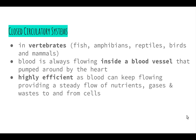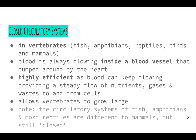A closed circulatory system is highly efficient, as blood can keep flowing and provide a steady flow of nutrients, gases, and wastes to and from the cells. This allows vertebrates to grow large, which ties into the idea that organisms need transport systems in order to carry nutrients to cells and wastes away. Without a closed circulatory system, organisms couldn't grow to the size that they are.